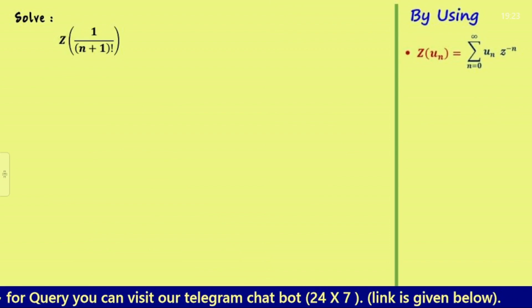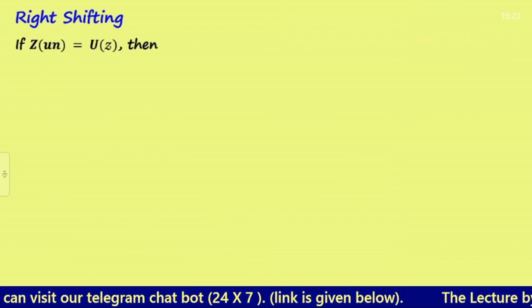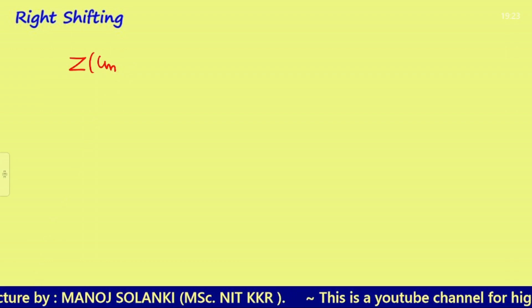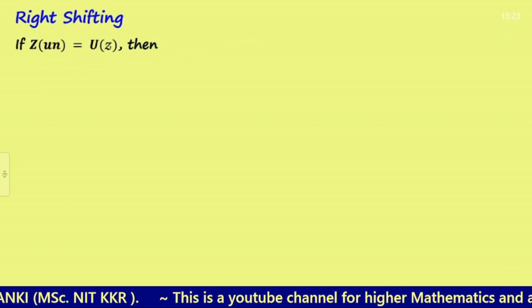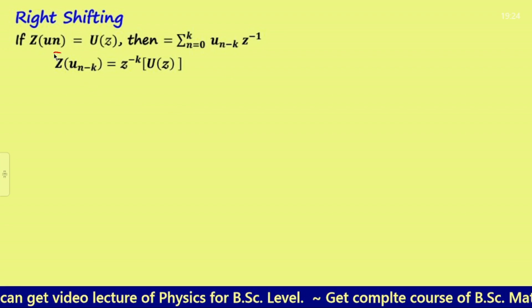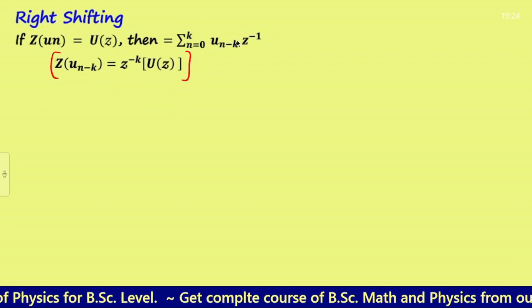Now we will discuss the right shifting theorem. The right shifting theorem states that if Z{u(n)} = U(z), then Z{u(n−k)} = z^(−k)·U(z). It is simply a division by z^k — this is the simple statement of the right shifting theorem.